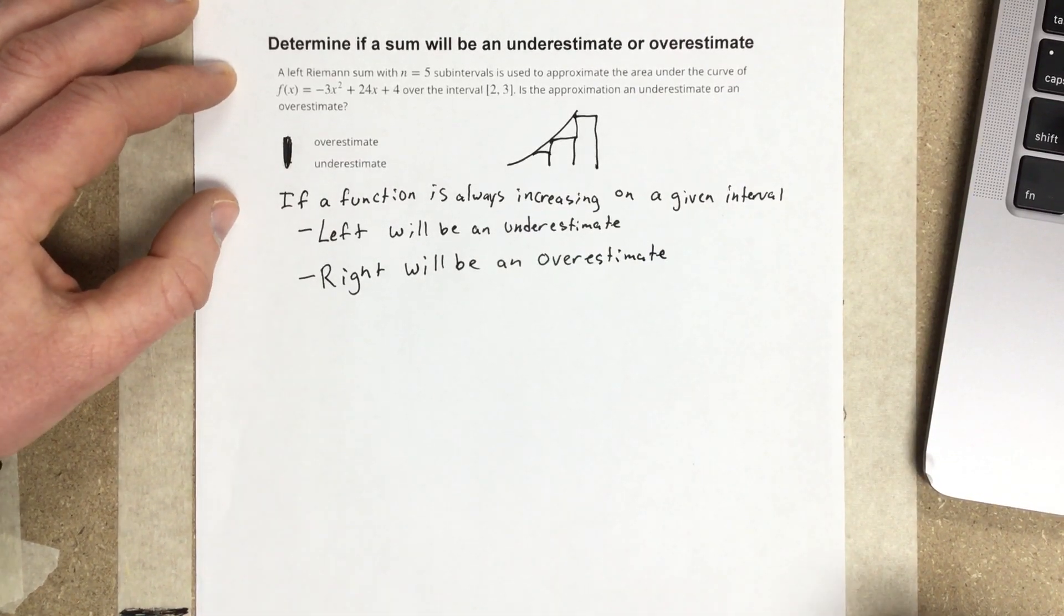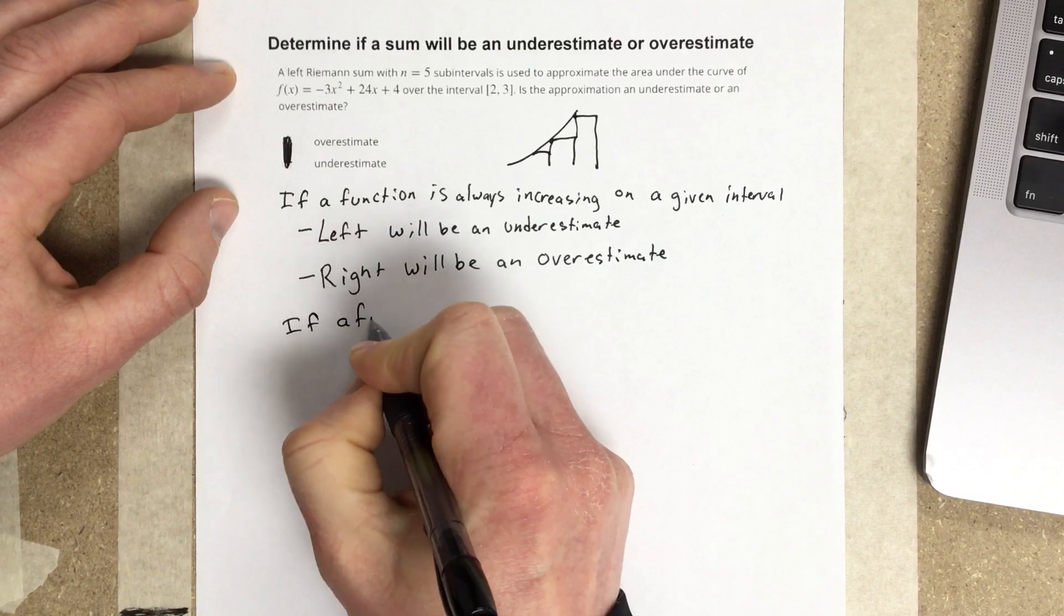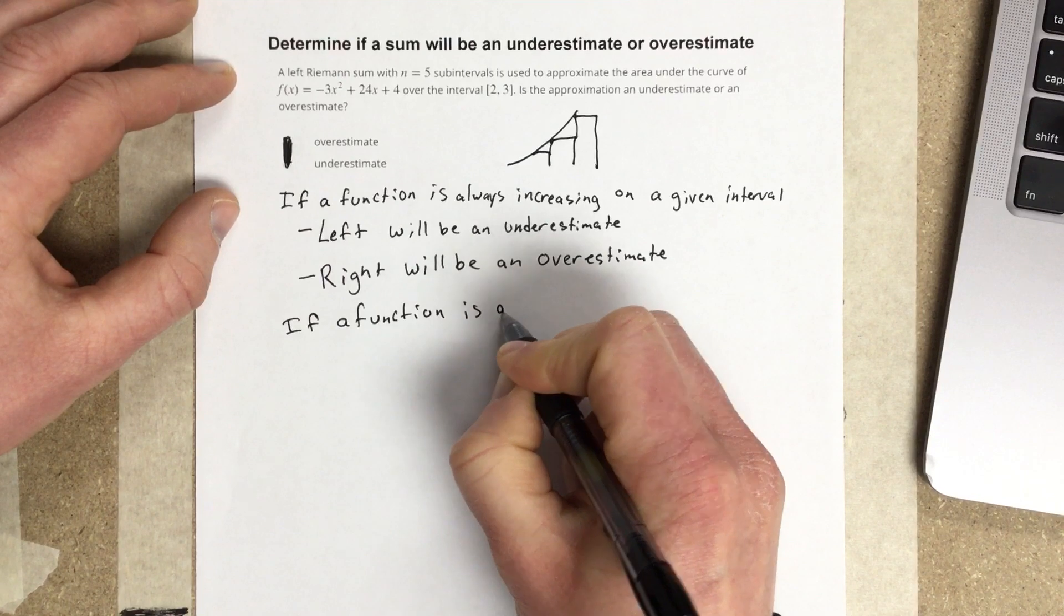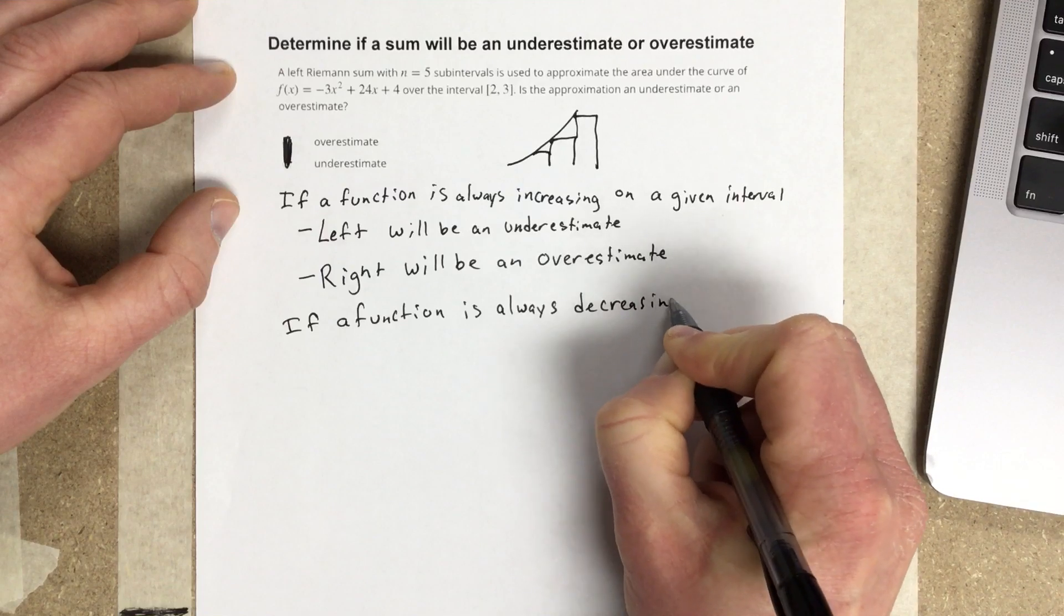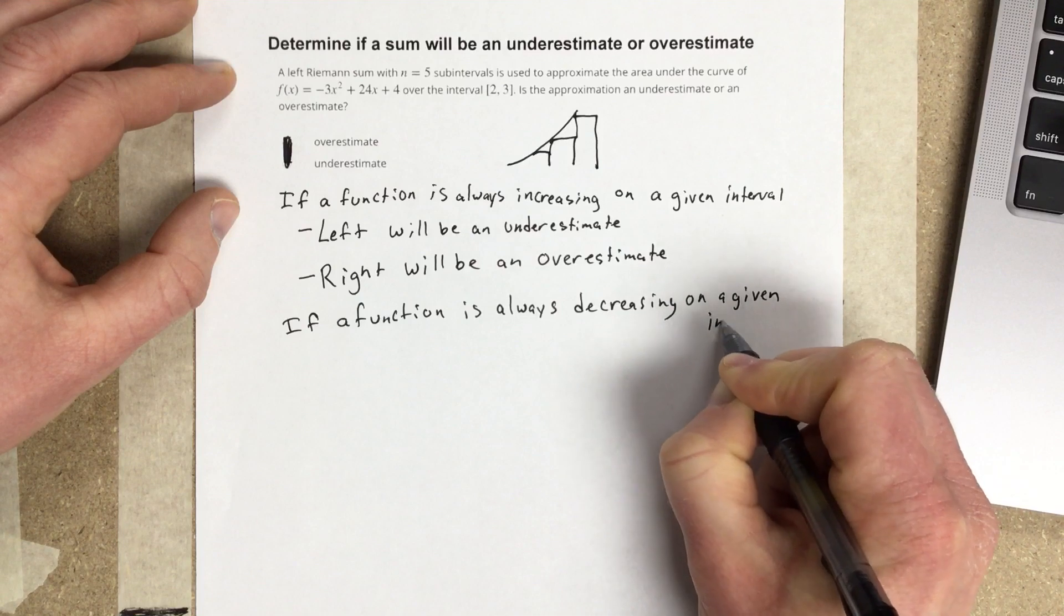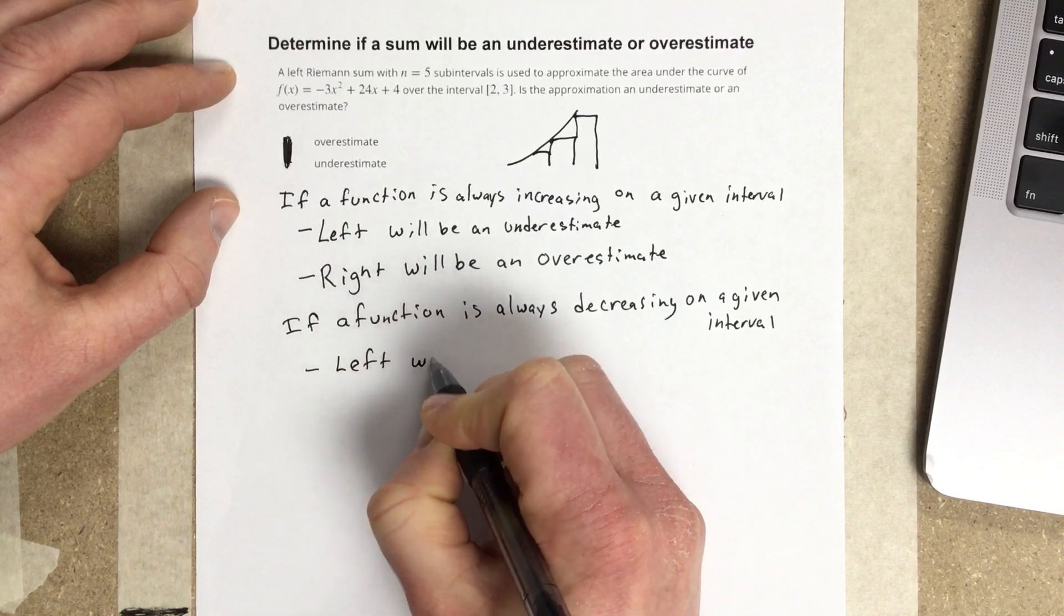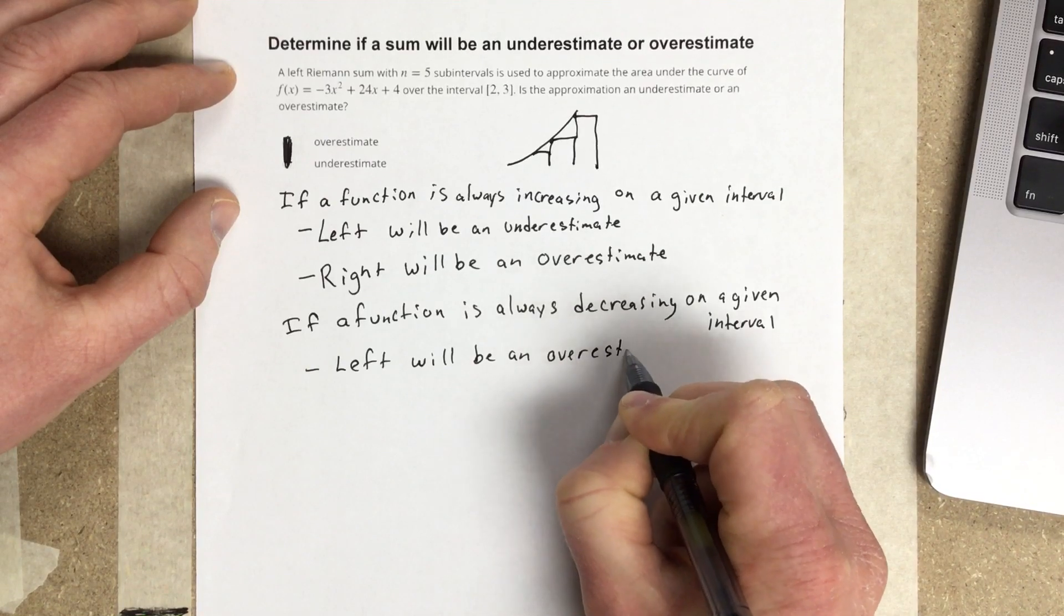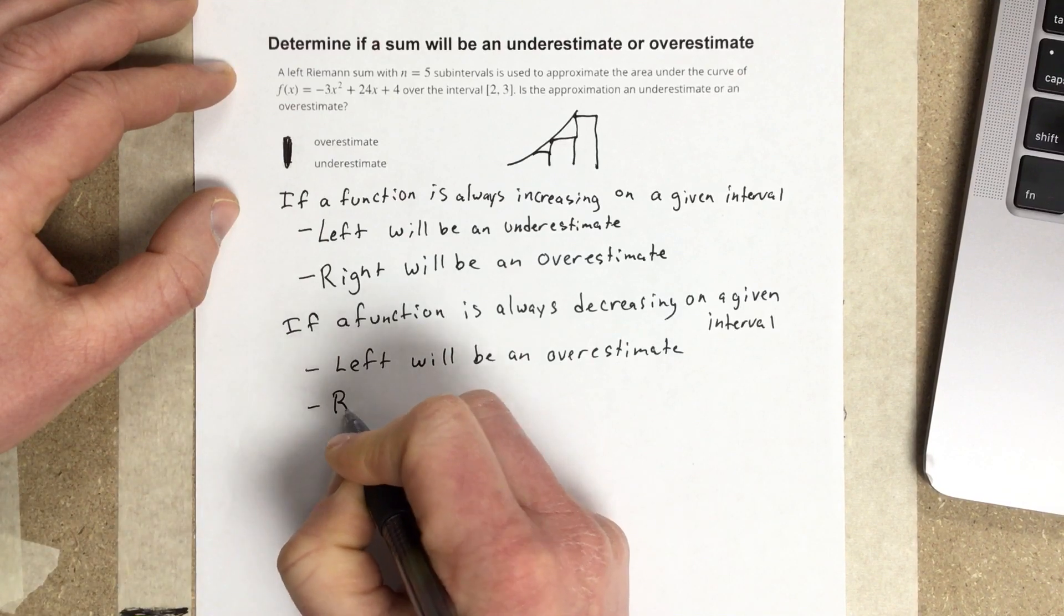And then the exact opposite is true. If a function is always decreasing on a given interval, then left will be an overestimate and right will be under.